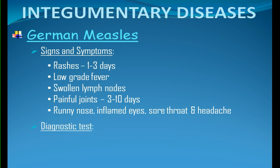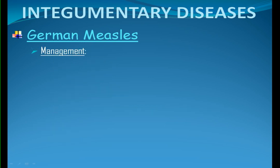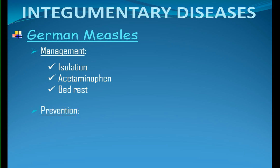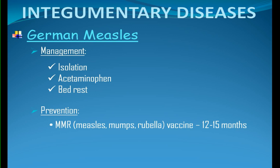Diagnostic tests: blood exam, to identify the virus, check for antibodies and previous infections. Management: isolation, acetaminophen for fever and joint pains, and bed rest. Prevention: MMR — the measles, mumps, rubella vaccine — should be given at 12 to 15 months.